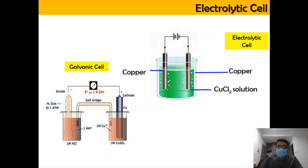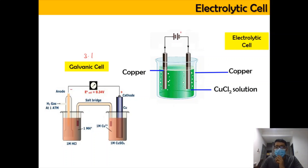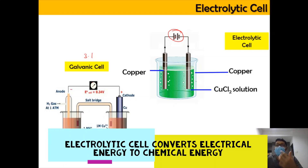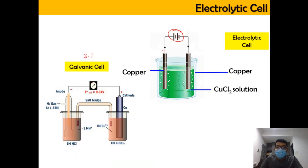First, let's look at the differences between the galvanic cell and electrolytic cell. The galvanic cell, which you learned in subtopic 3.1, has electrolytes divided into two beakers connected with a salt bridge. However, in the electrolytic cell, everything happens in the same container — for example, a copper chloride solution — and it is connected to a dry cell instead of a voltmeter. The dry cell provides energy to the system, resulting in a transformation from electrical to chemical energy.